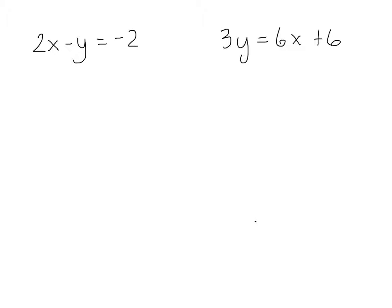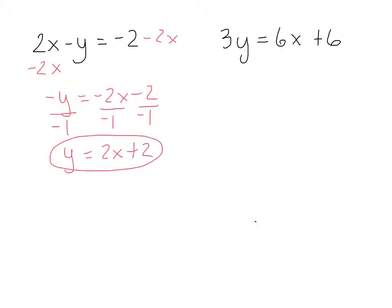So what let's do is let's get each of these where y is by itself. So on this one, I'm going to subtract 2x on both sides, and that gives me negative y equals negative 2x minus 2. And then I'm going to divide by negative 1 on both sides, and so I have y equals 2x plus 2. So there's one equation.